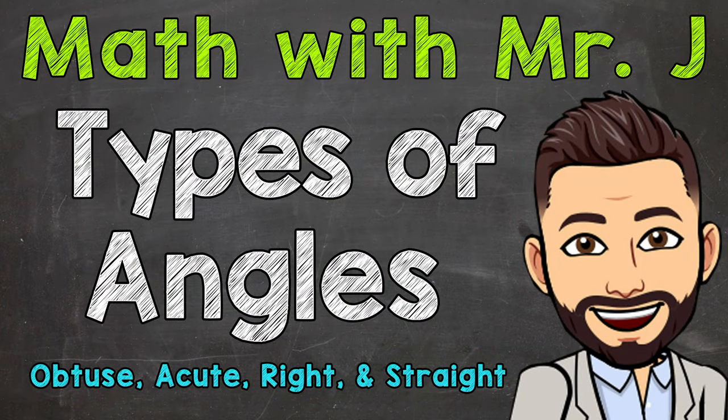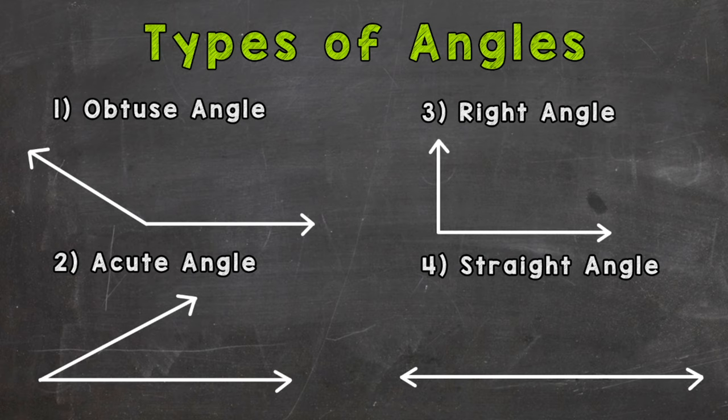Welcome to Math with Mr. J. In this video, we're going to take a look at four different types of angles. Let's jump right into number one, the obtuse angle.